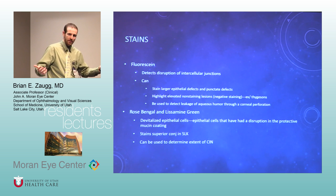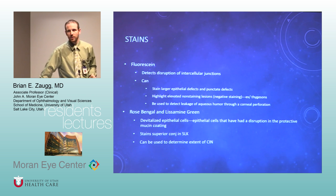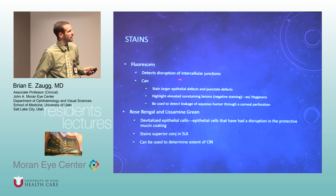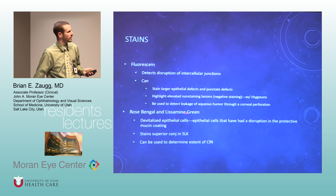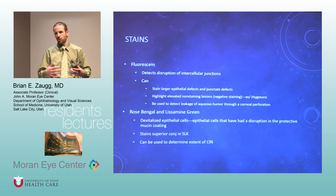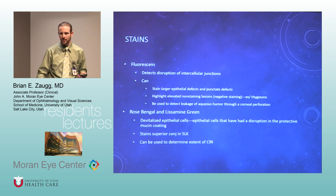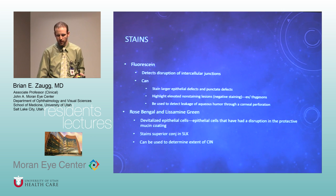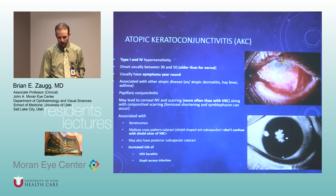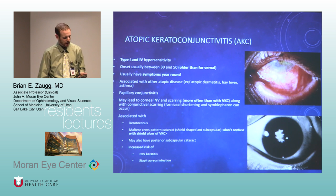They like to talk about stains — fluorescein versus rose bengal. Fluorescein stains disruptions of cellular junctions. Rose bengal and lissamine green stain devitalized epithelial cells — the cells don't have to be broken down, so they can bring out more subtle things that fluorescein won't show.